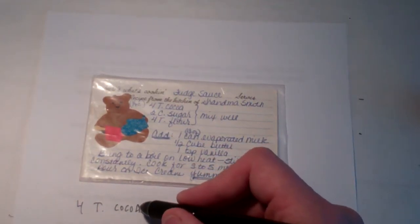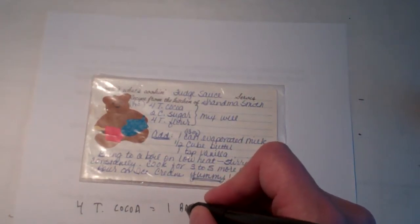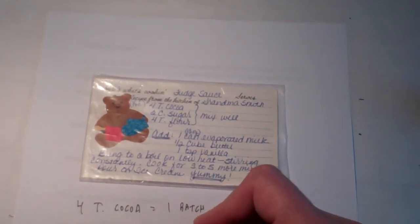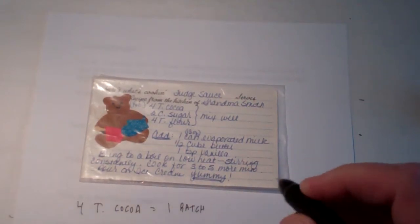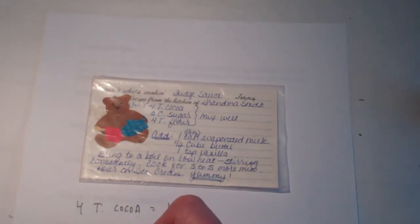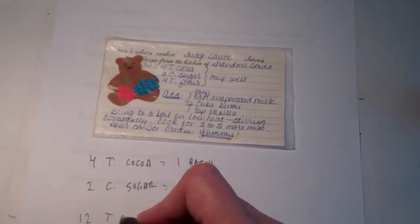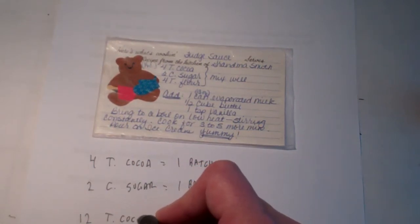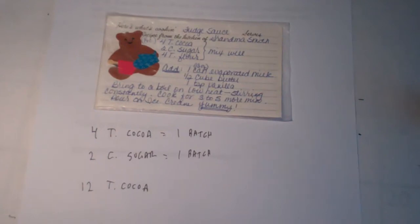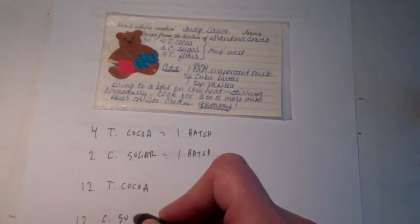In this recipe, four tablespoons of cocoa would give me enough cocoa to make one batch of fudge sauce, and two cups of sugar would give me enough sugar to make one batch of fudge sauce. I'm going to look in my pantry and find out how much of each ingredient I have. I notice that I have exactly 12 tablespoons of cocoa and exactly 12 cups of sugar.